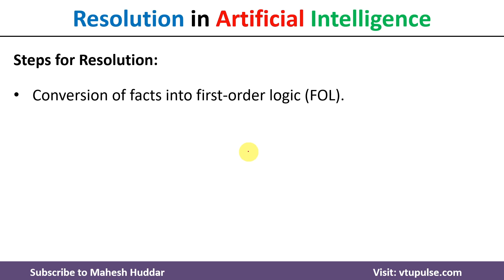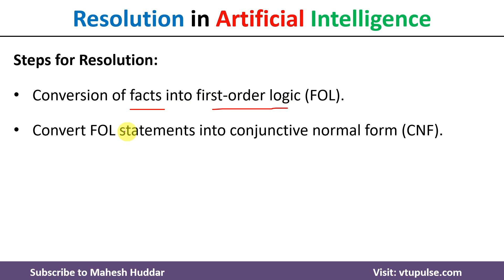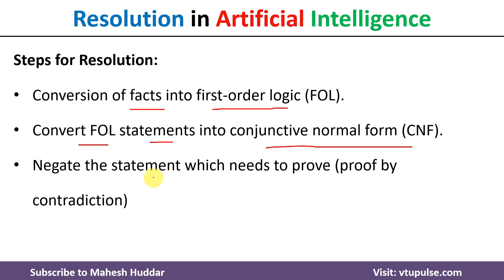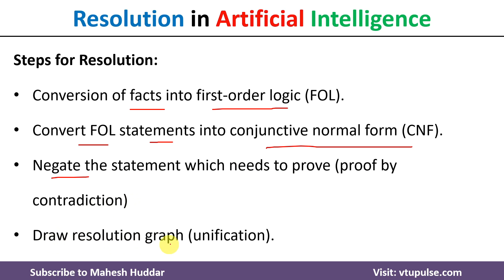There are mainly four steps in resolution. First, we need to convert the given facts into first order logic. Once you convert the facts into first order logic, we need to convert those statements into conjunctive normal form, that is CNF. Next, we need to negate the statement which needs to be proved — that is nothing but proof by contradiction. And then we need to draw the resolution graph, known as unification. We will discuss each of these steps one by one.